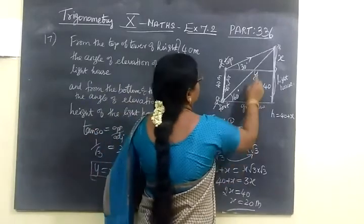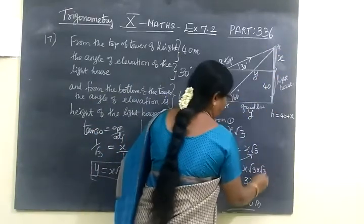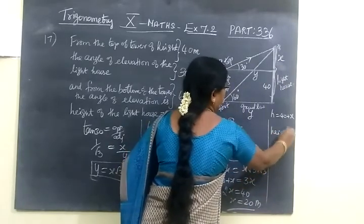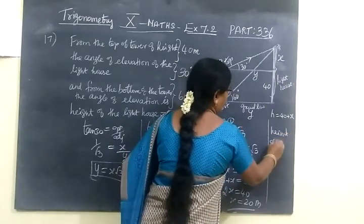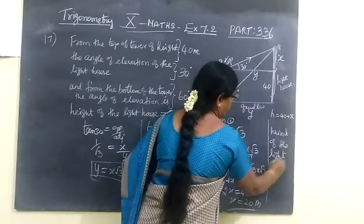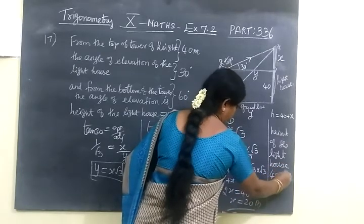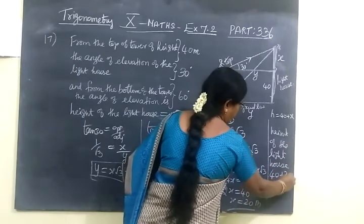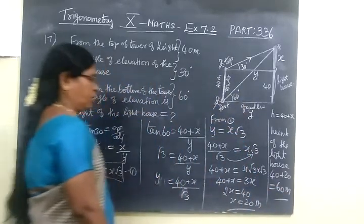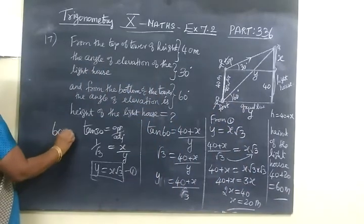x is this length. Therefore the height of the lighthouse equals 40 plus x equals 40 plus 20 equals 60 meters. So the final answer is 60 meters.